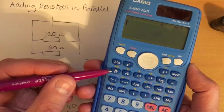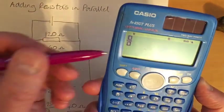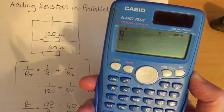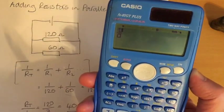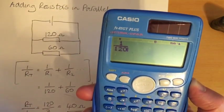There's three buttons you need to know about. The first button is this one. That's the fraction button. Watch, if I press it, a wee fraction appears here. We want to put in 1 over 120. So, I'm going to press the number 1, cursor down, 120. That's 1 over 120.